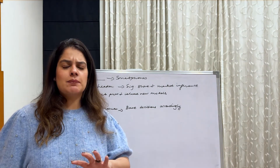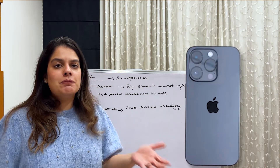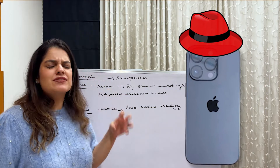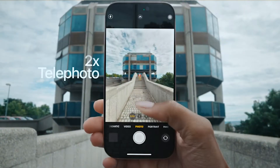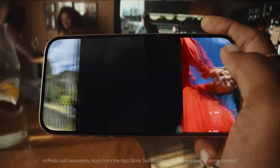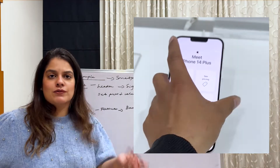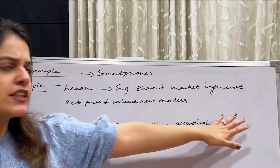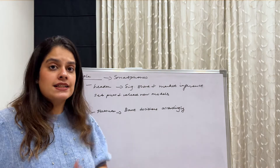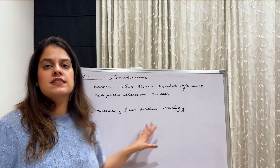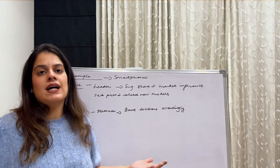Here's an example you can all relate to — smartphones. Think about Apple, which is of course a leader because it has a very significant share in the market and a very big market influence. Every year when Apple launches a new iPhone model, it's an event unlike other phones. Apple has a great market influence and sets its prices and releases its models. Then other followers like Samsung base their decisions — their pricing strategies — according to the models Apple has launched.